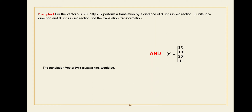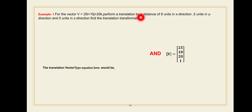Hello everyone. In this video we are going to discuss how you can solve the problems of transformation. This is the first example of transformation. For the vector v equal to 25i plus 10j plus 20k, perform the translation by a distance of 8 units in the x direction, 5 units in the y direction, and 0 units in the z direction. Find the translation transformation.